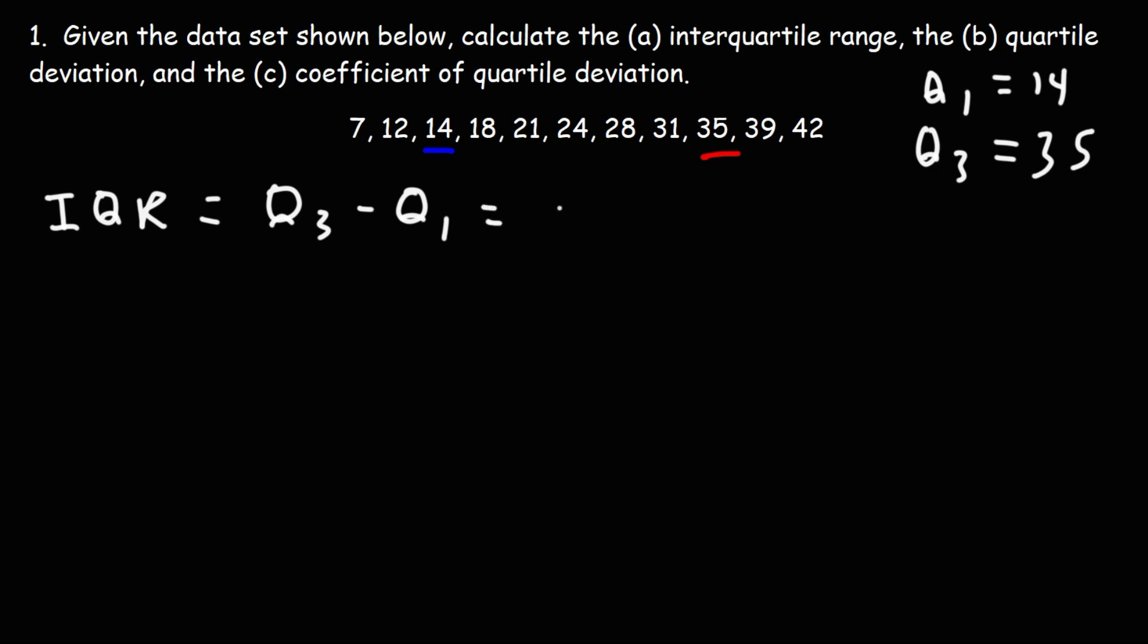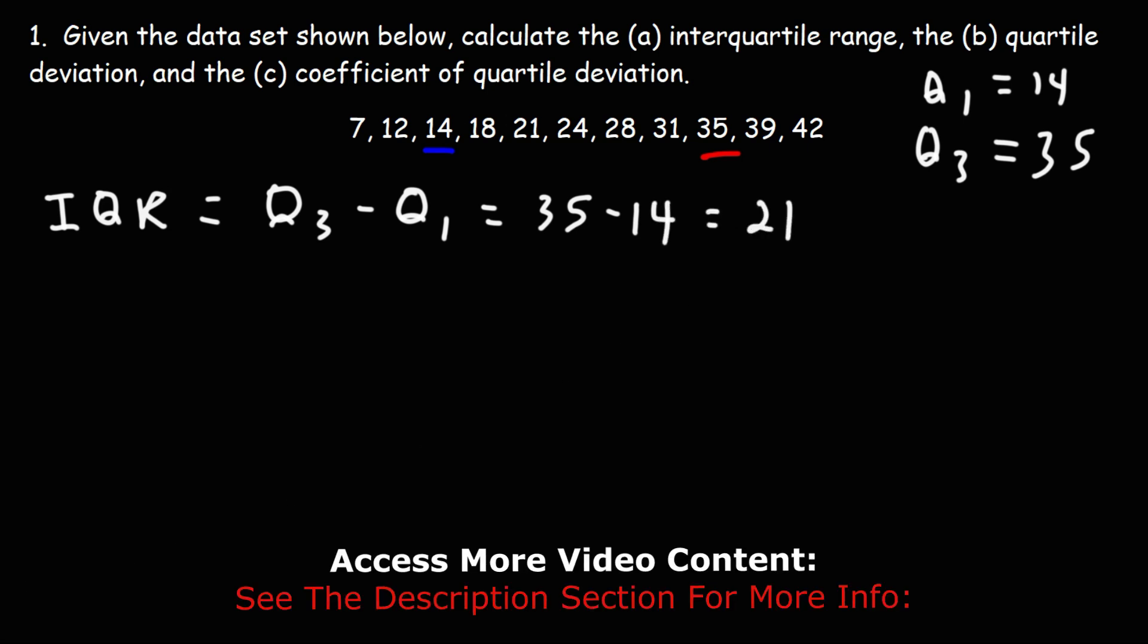So now we can determine the interquartile range. It's going to be 35 minus 14, which is 21. So that's the answer for part A.